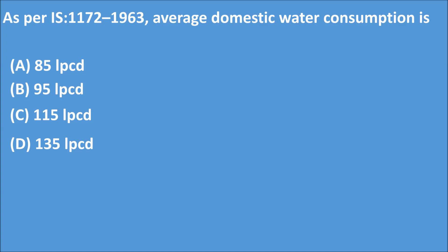Q1: As per IS 1172-1963, average domestic water consumption is — A) 85 LPCD, B) 95 LPCD, C) 115 LPCD, D) 135 LPCD. The correct answer is Option D: 135 LPCD.